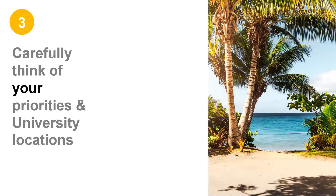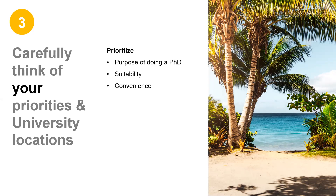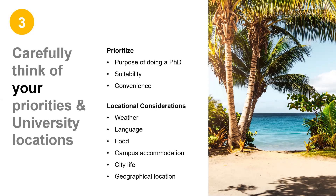Point number three. Before jumping into filling forms, it is essential to know your current priorities and decide on university location. PhDs are generally undertaken in our late twenties and everyone has different priorities in their life. Think in terms of purpose of doing a PhD, suitability and convenience. Maybe you want to stay close to your family, or want to go for a part-time degree in order to continue your job, or maybe university reputation and ranking matters you the most. In any case, university location also plays a major role in terms of weather, language, food, accommodation, city life and geographical location. A major amount of time also goes outside the department, so as a PhD student it is crucial to take care of your overall well-being by maintaining a healthy work-life balance.